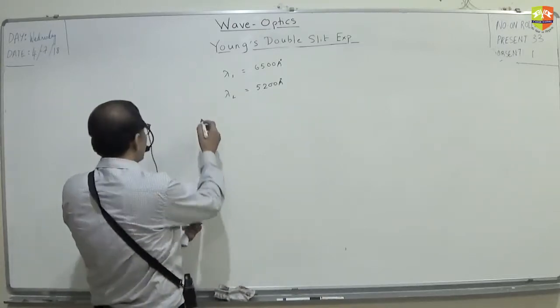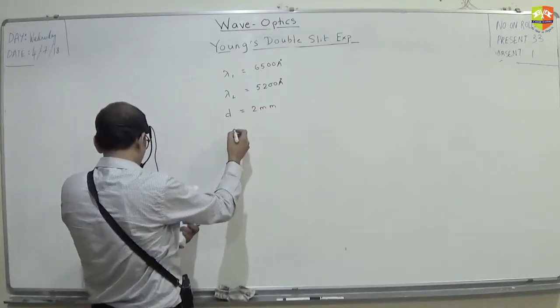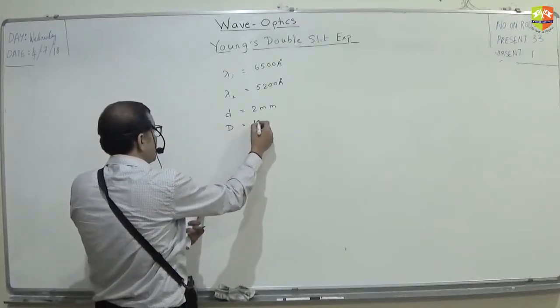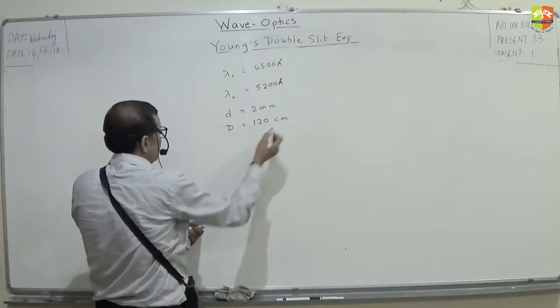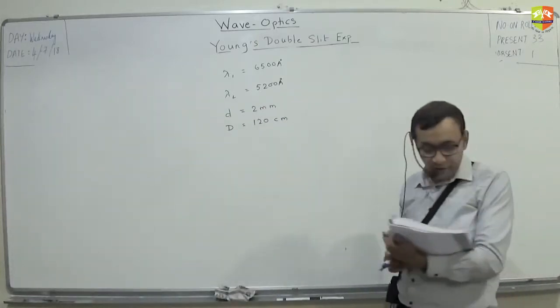To obtain interference fringes in a Young's double slit experiment, the distance between the slits is 2 mm. Distance between the plane of the slit and the screen is 120 cm. These things are given. Okay. You need to find this.